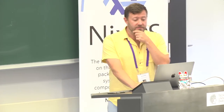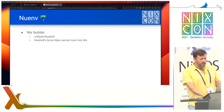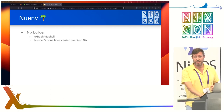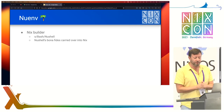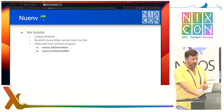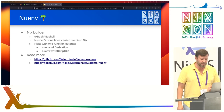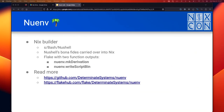Finally, we get to Nuenv. Nuenv is a Nix builder — a realizer of Nix derivations — that uses Nu Shell instead of Bash. Concretely, Nuenv is a flake that provides two Nix functions you can apply as Nix packages overlays: its own version of make derivation and its own version of write script bin, both of which work pretty much exactly like their counterparts in the standard environment. You can read more about Nuenv on GitHub at slash determinate systems slash Nuenv, or on Flake Hub at slash flake slash determinate systems slash slash Nuenv.